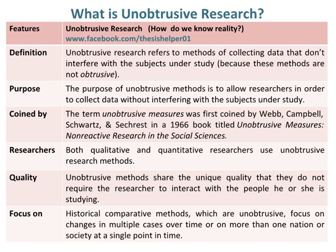The term unobtrusive measures was first coined by Webb, Campbell, Schwartz, and Secrest in a 1966 book titled Unobtrusive Measures: Non-Reactive Research in the Social Sciences. Both qualitative and quantitative researchers use unobtrusive research methods. Unobtrusive methods share the unique quality that they do not require the researcher to interact with the people he or she is studying.